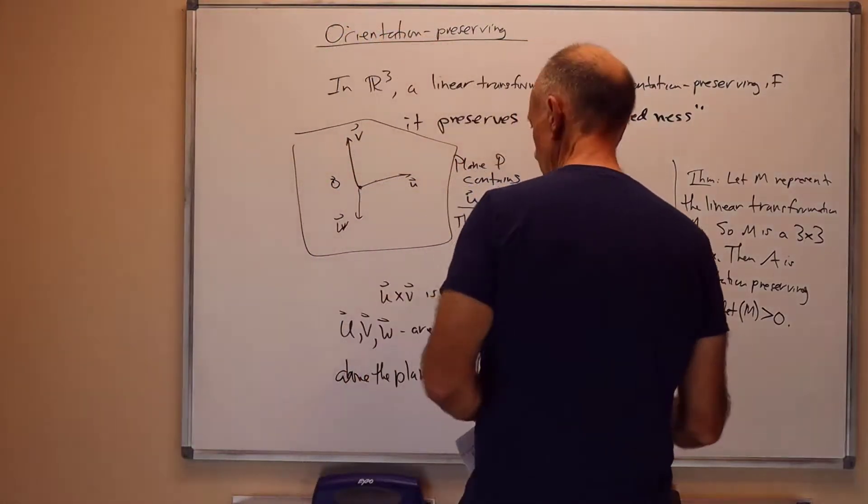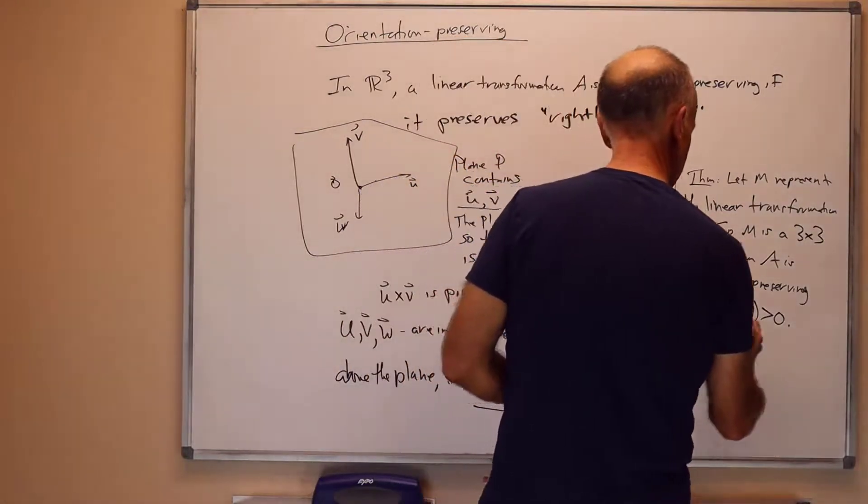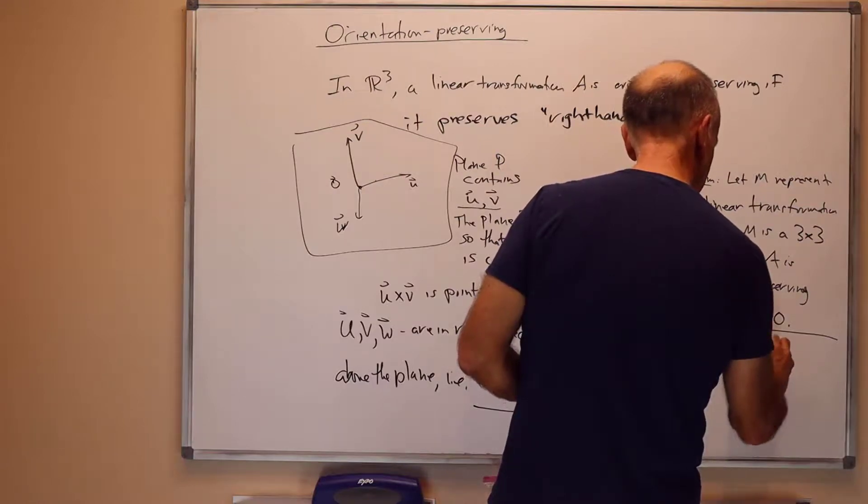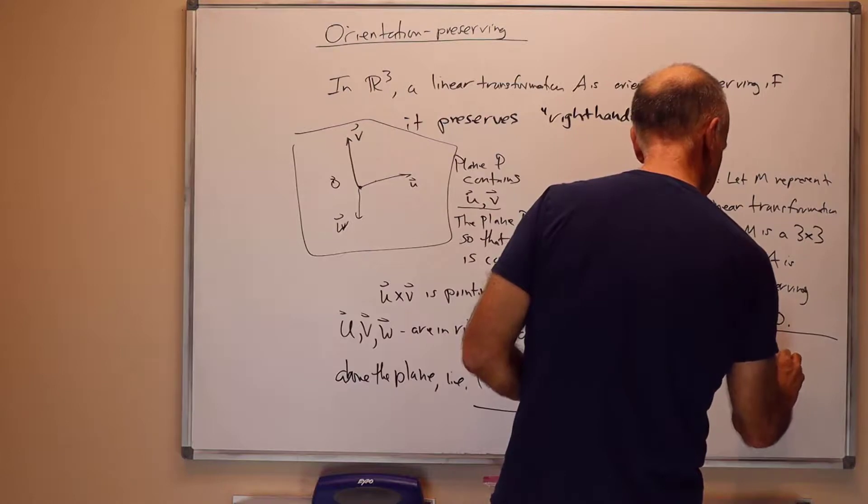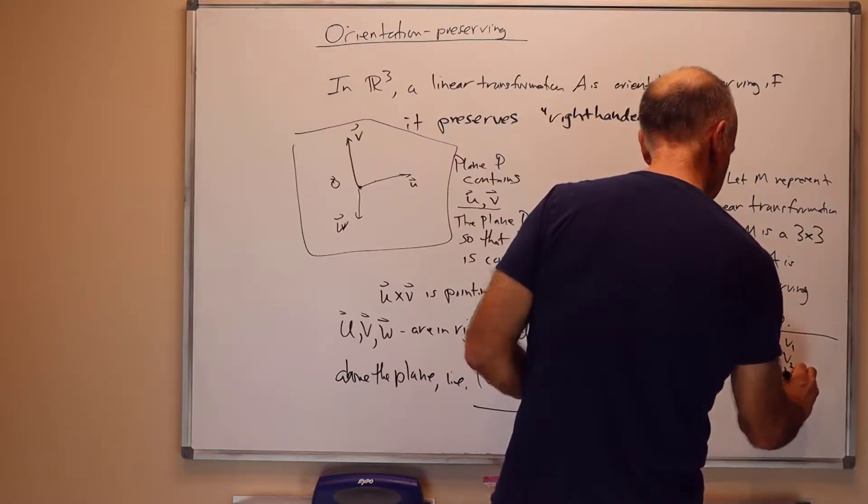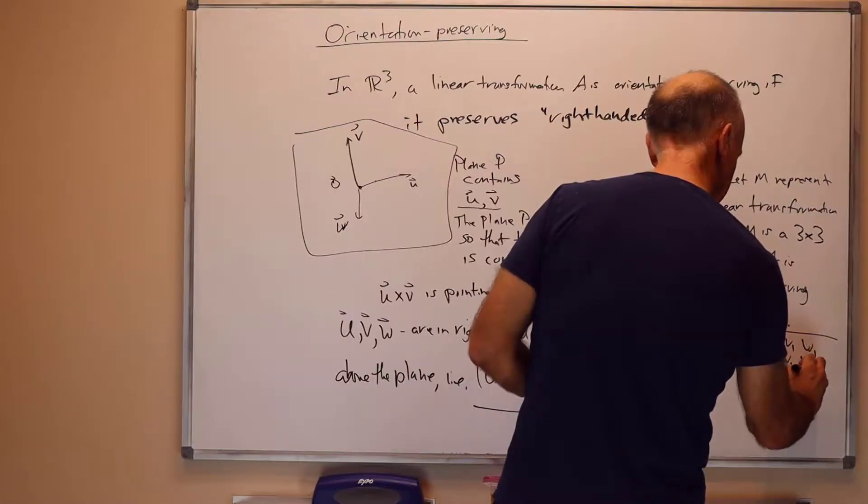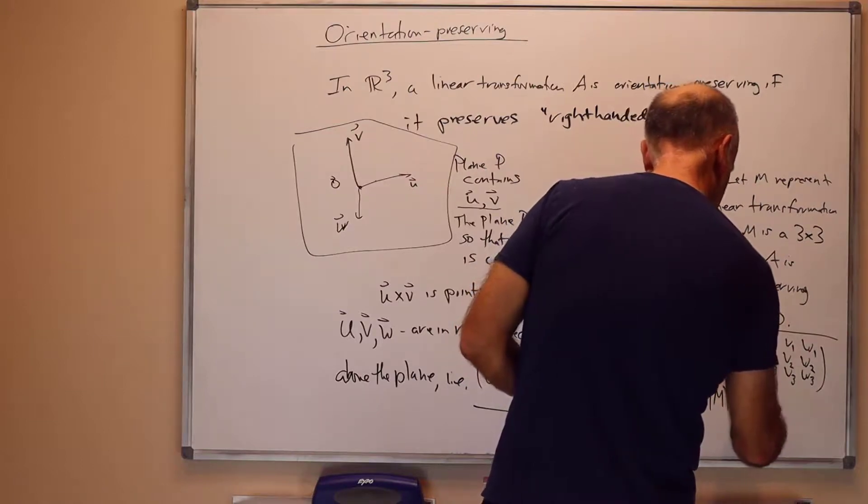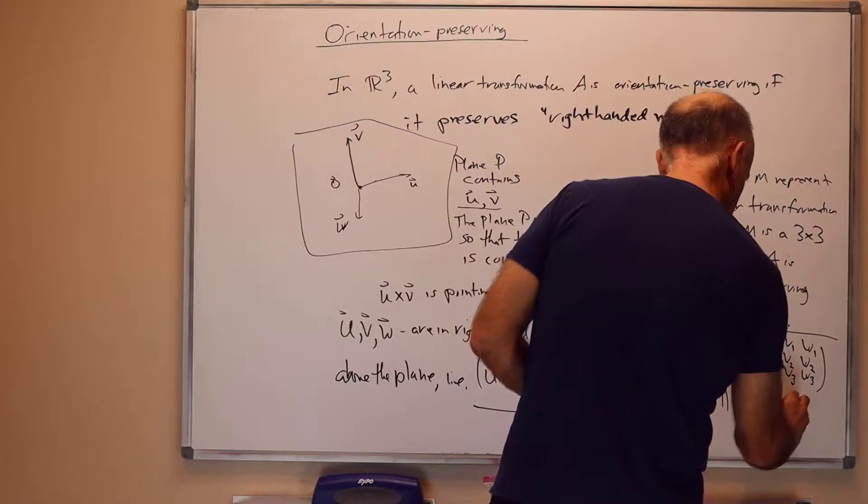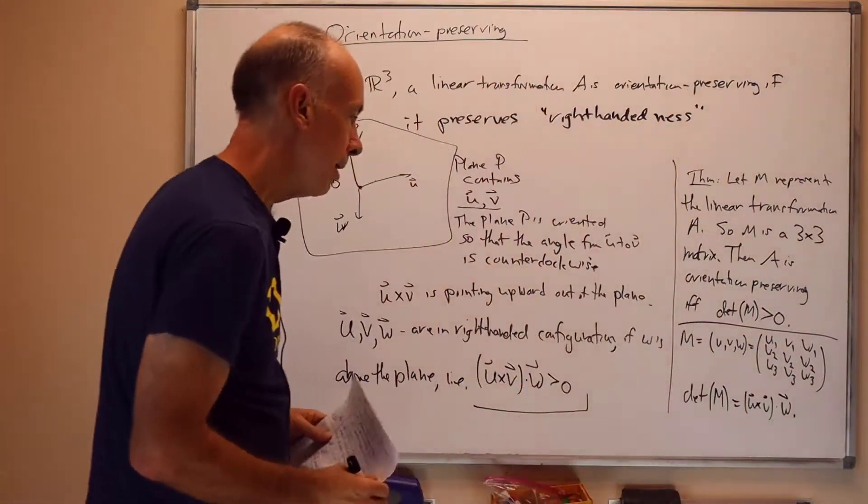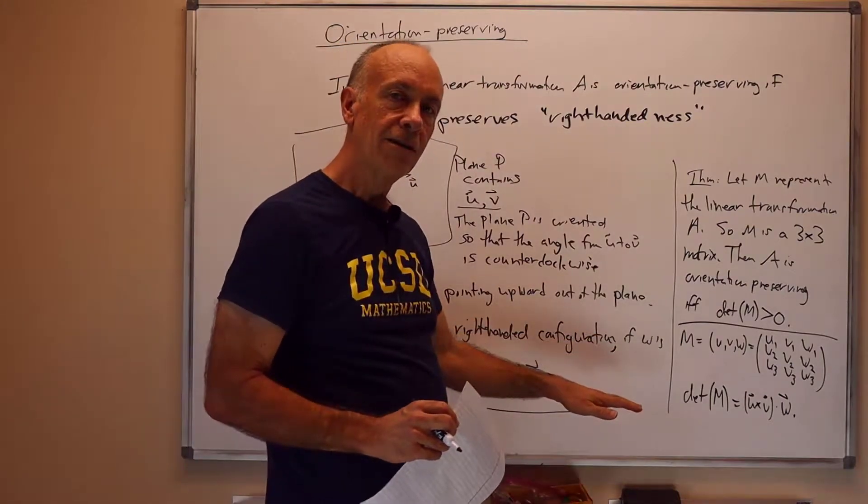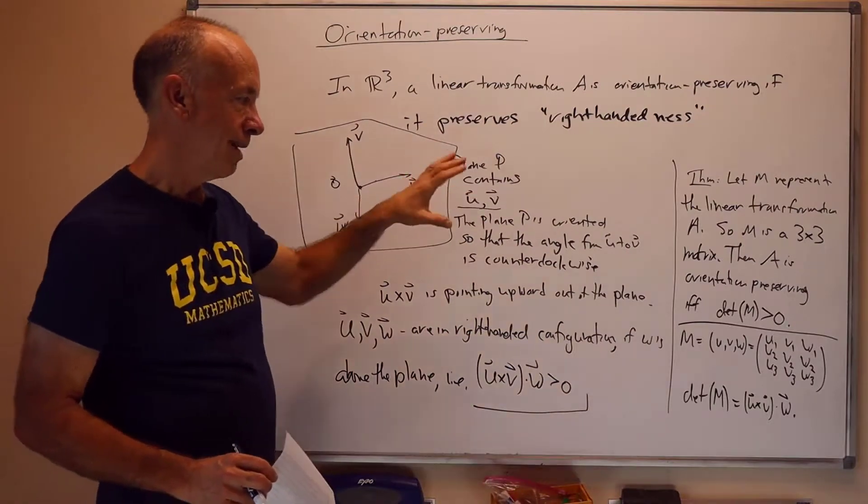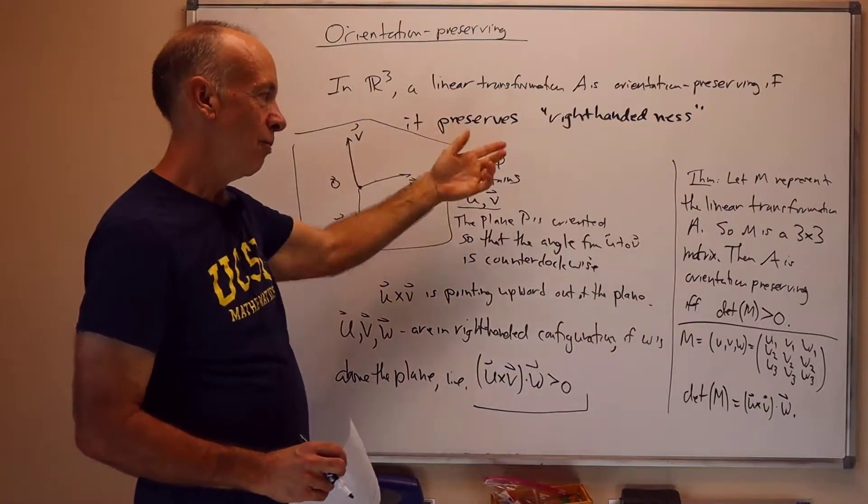And the point here is the following. I'm not going to give you a full proof here, but the point here is that if you have M as columns u, v, w. So, that means M is u1, u2, u3, v1, v2, v3, w1, w2, w3. Then, we have the determinant of M is actually equal to u cross v dot w. And, as we said, this will be greater than zero if A is orientation-preserving. So, that's almost a proof of the theorem. It's a proof of half of the theorem, the forward direction.